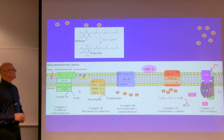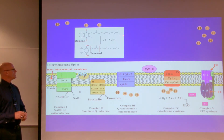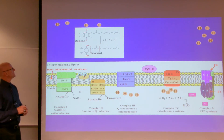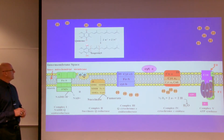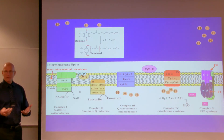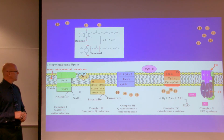Ubiquinone has a quinone ring and a long isoprenyl tail. There are ten isoprenyl units on ubiquinone. In its oxidized form, when electrons and hydrogens bond to the double-bonded oxygen, it becomes reduced to ubiquinol, QH2. This long hydrophobic tail allows ubiquinone to move through the lipid bilayer of the inner mitochondrial membrane.